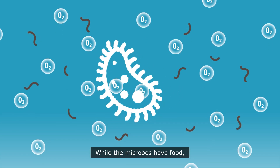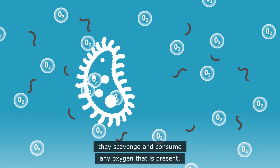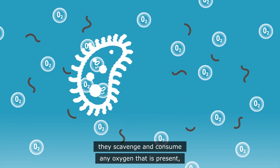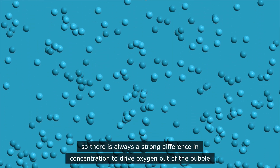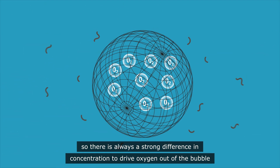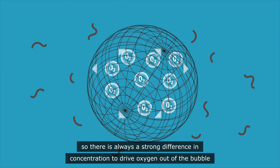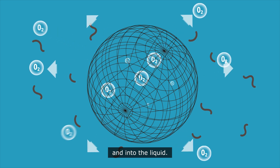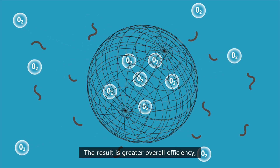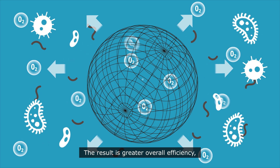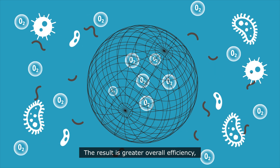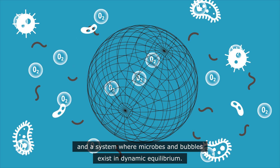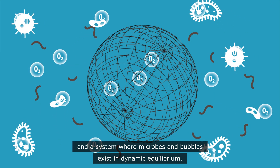While the microbes have food, they scavenge and consume any oxygen that is present. So there is always a strong difference in concentration to drive oxygen out of the bubble and into the liquid. The result is greater overall efficiency, and a system where microbes and bubbles exist in dynamic equilibrium.